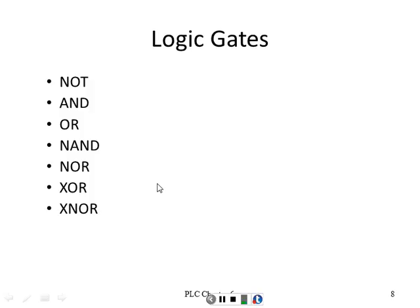The basic gates are: NOT or inverter, AND, OR, NAND, and NOR — those are the five basics. Then we have XOR and XNOR, which we'll talk about also.